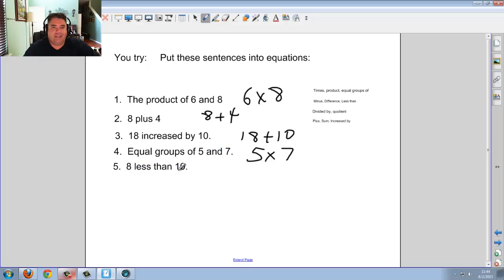And 8 less than 10. Now, interesting thing here. 8 less than 10. 10 is actually the beginning. So you put the 10 first. Now, why is that? Because 8 less than means you're minusing by 8. But minusing from what? That's where 10 comes in. So 10 is actually first, then you minus 8. So hopefully, you got these right. If you missed one, not a big deal. Just go back and see what you did.